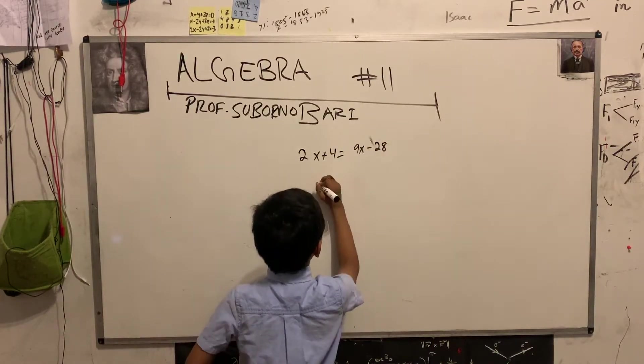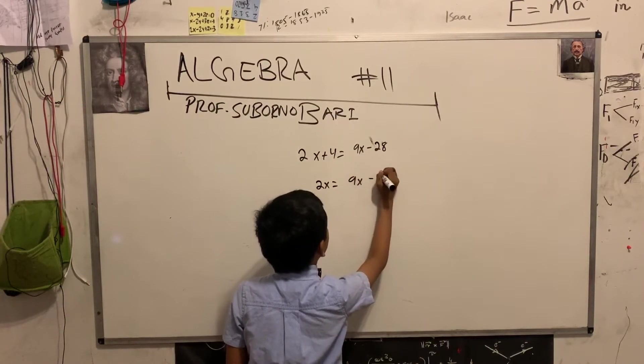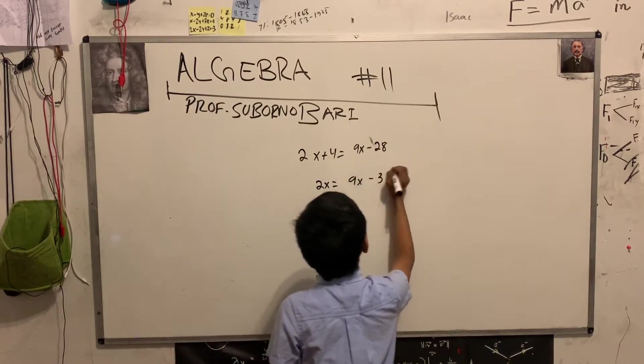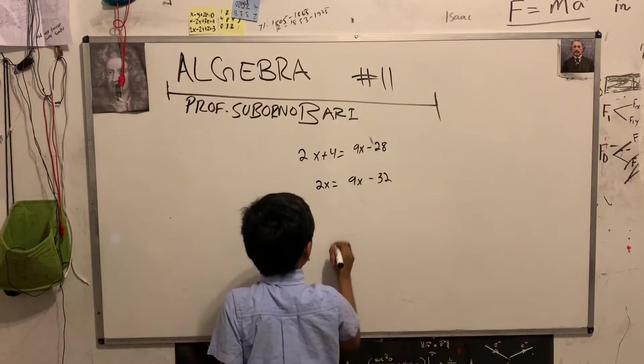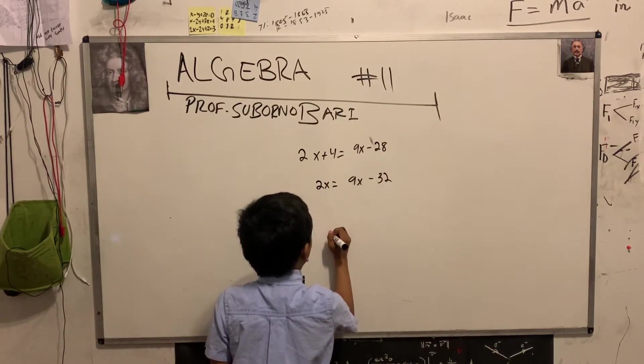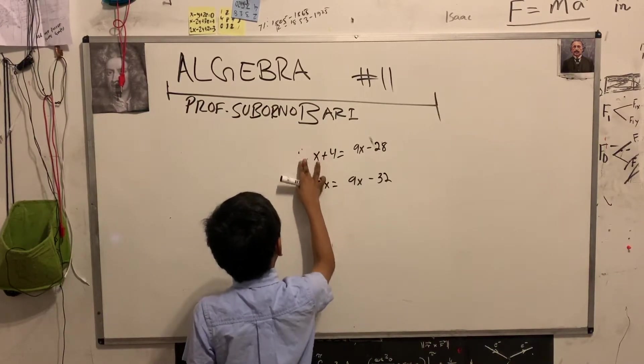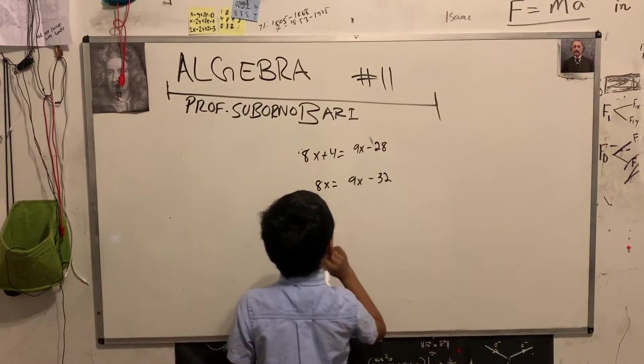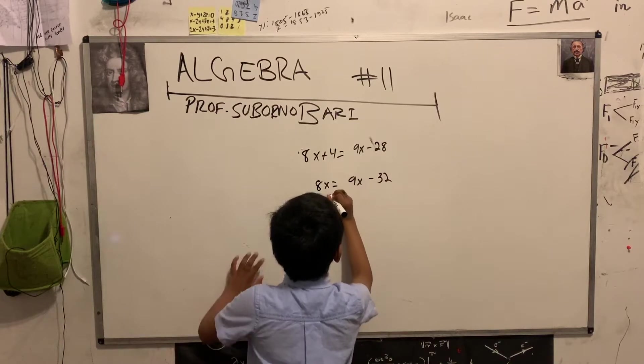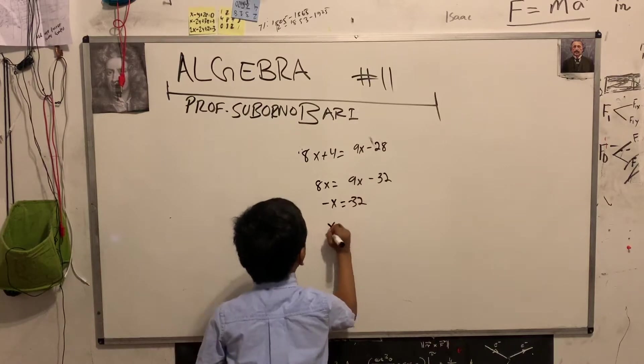So now, this is pretty simple. We can subtract 4 from both sides to isolate the 2x. So that's going to give us this. And then we can subtract 9x from both sides, giving us, oh shoot, I still plan for this. So, 8x, 8x, 8x, 8x. So now 8x equals the 9x minus 32. So minus x equals minus 32, signaling x equals 32.